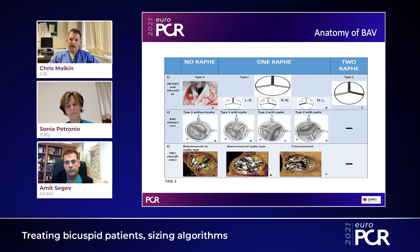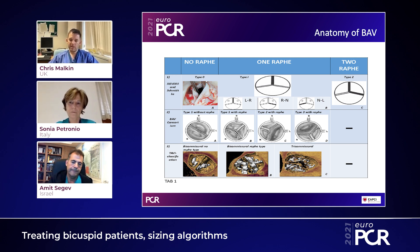From a TAVI implanter's point of view, the more useful algorithms describe whether there is bicommissural without raphae, or tricommissural. It's only when we understand this anatomy from CT — which is so important — that we can have successful procedures with TAVI devices. There is a plethora of data on outcomes, but the data clearly show that understanding the anatomy by CT is the key to success.